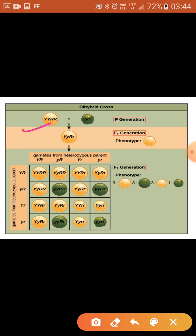We can use any two of the seven contrasting characteristics; here we use seed colour and seed shape. In the parental generation, these two traits are used and then gametes are formed. After gamete formation, the first filial generation (F1) will have all round yellow seeds, because round shape and yellow colour are both dominant. In F1, only dominant characters express themselves while recessive characters are suppressed.